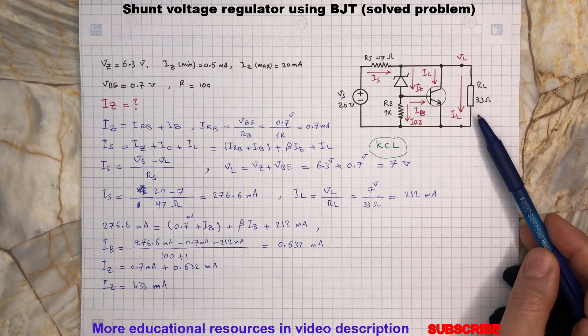The base current will increase, which allows the collector of the transistor to absorb more current, and this again will maintain the regulated voltage across the load.